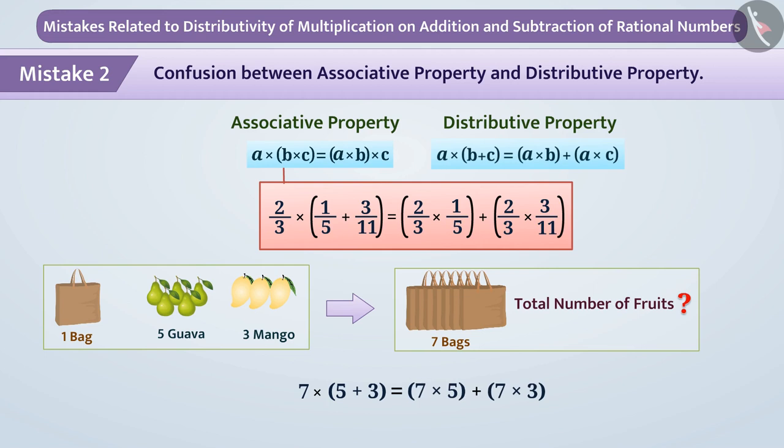Like 7 multiplied by 5 plus 7 multiplied by 3. The number of fruits will be equal in both ways. 7 multiplied by 5 plus 3 is equal to 7 multiplied by 5 plus 7 multiplied by 3. Here we have multiplied both 5 and 3 by 7, which means we have distributed addition on multiplication. This is also true in the context of rational numbers.